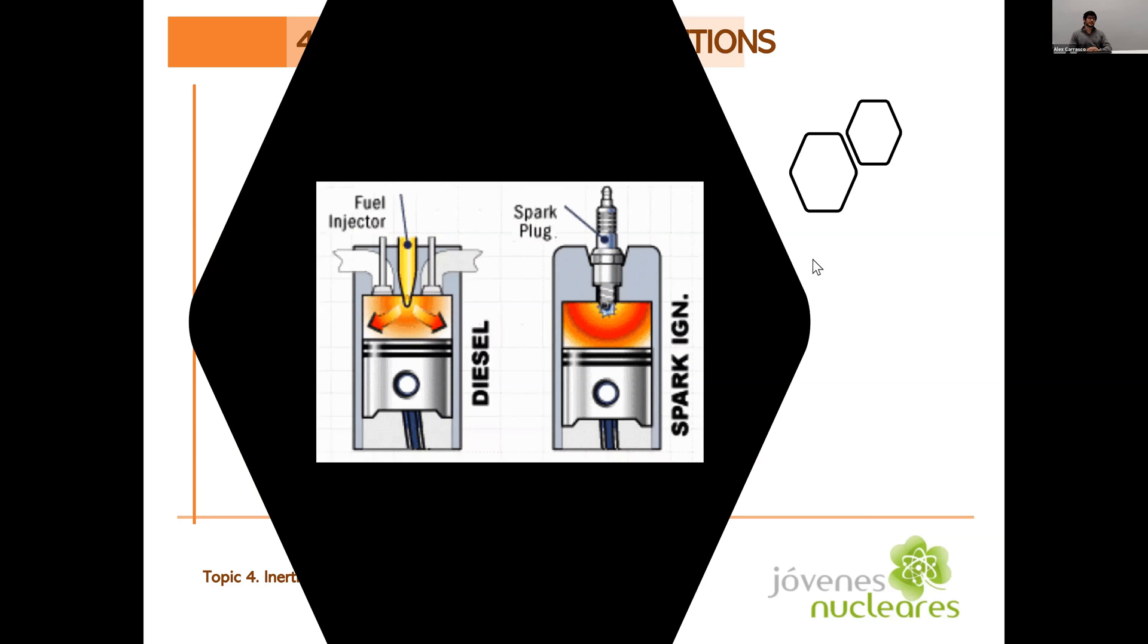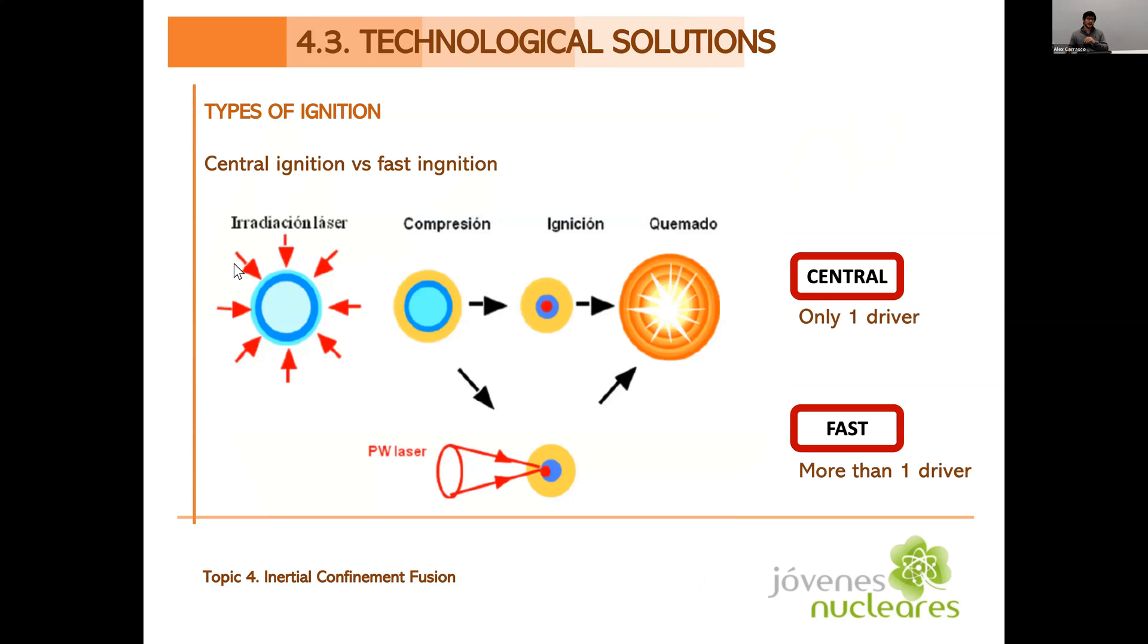I really like to compare this with a metaphor to engines, to car engines. So if there are any engineers in the audience, they will understand this matter with this metaphor. I think this is like comparing a diesel engine and a normal gasoline engine. The diesel engine compresses the fuel until it has ignition and a gasoline engine compresses the fuel. And then the spark plug produces a small spark that will then ignite the whole fuel. So in the same way, central ignition would be like a diesel engine and fast ignition as a little spark plug in the form of another laser that produces the ignition.